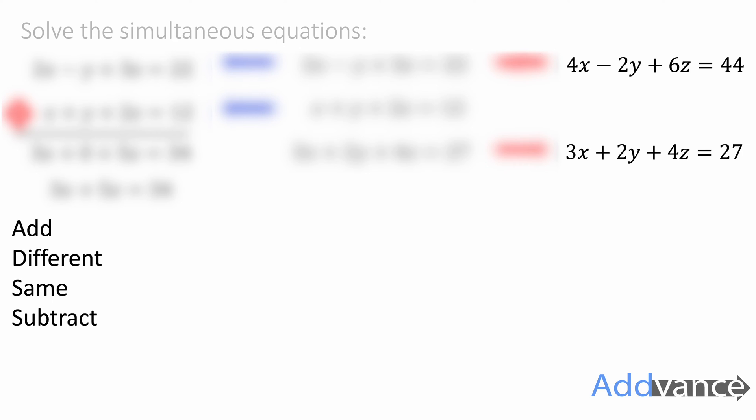Now over here we've got these two equations and we've got a minus 2y and a positive 2y. Again they are opposites. They are different signs. So we're going to add these together.